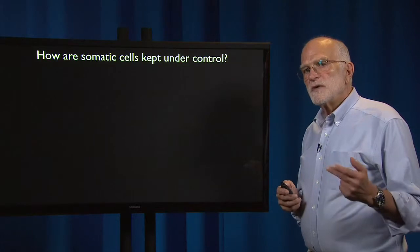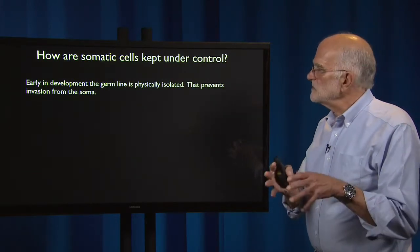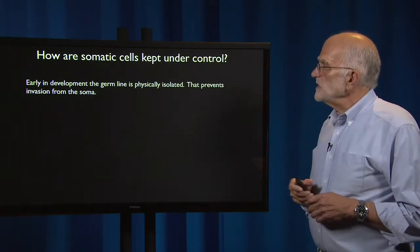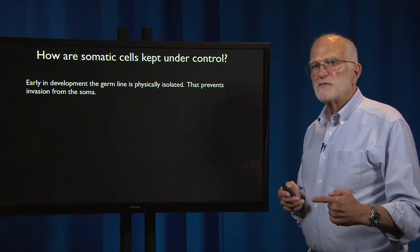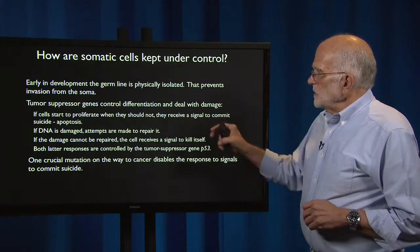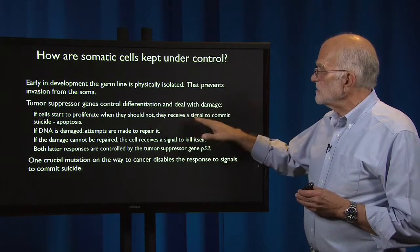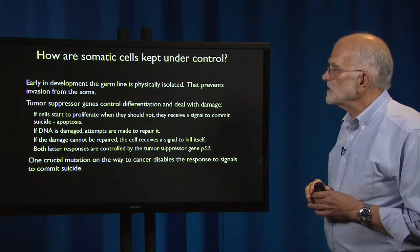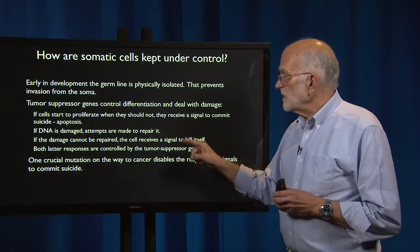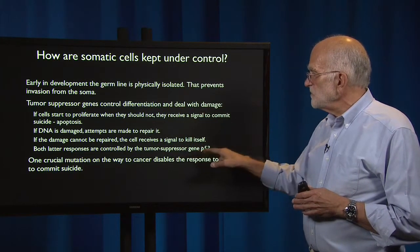How are somatic cells normally kept under control? Well, early in development the germ line is physically isolated, at least in organisms like us. That prevents invasion from the soma, keeping somatic cells from defecting from the covenant and getting their genes into the next generation. Tumor suppressor genes control differentiation and deal with damage. So if a cell starts to proliferate when it should not, it receives a signal to commit suicide — apoptosis. If DNA is damaged, an attempt is made to repair it, but if the damage cannot be repaired, the cell receives a signal to kill itself. Both of these responses are controlled by the tumor suppressor gene P53.